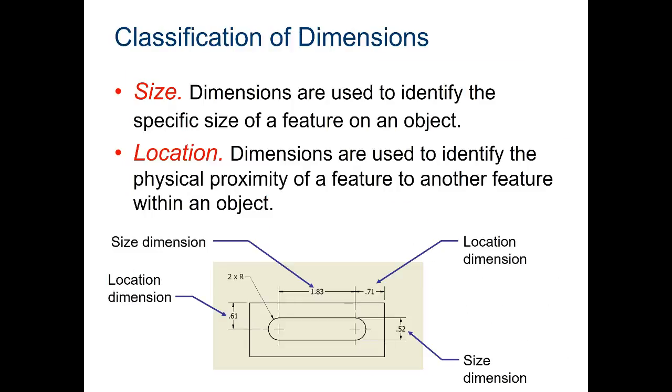There are two kinds of dimensions, size and location. Size is telling us exactly how large to make the part.